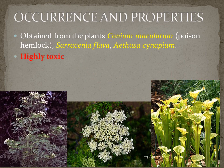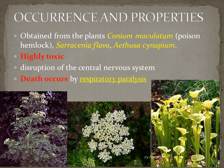Conine is a very poisonous alkaloid. It is highly toxic. It affects the central nervous system and ultimately leads to death. Death occurs by respiratory paralysis or respiratory failure, which is a condition in which there is an inadequate level of oxygen or carbon dioxide.